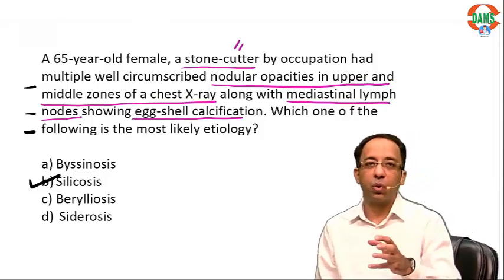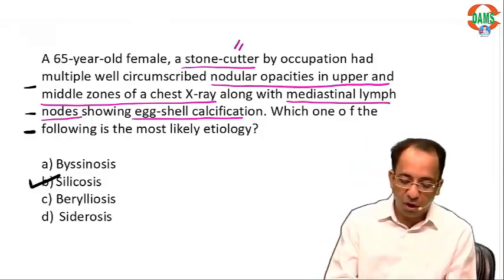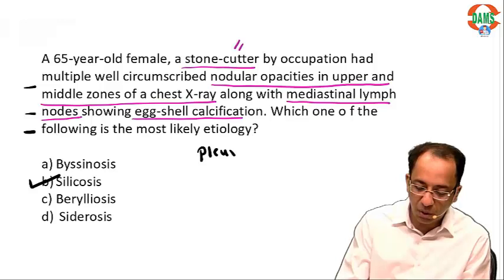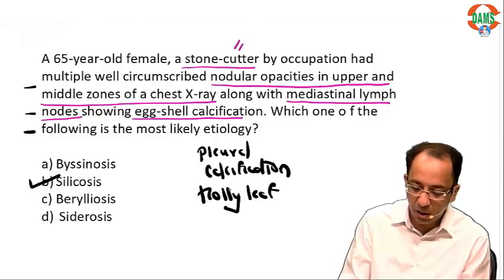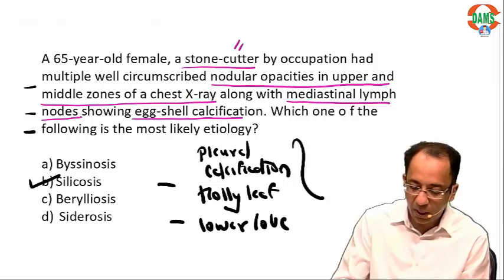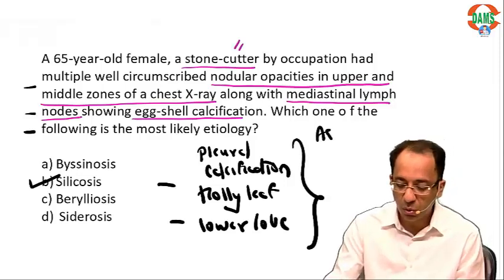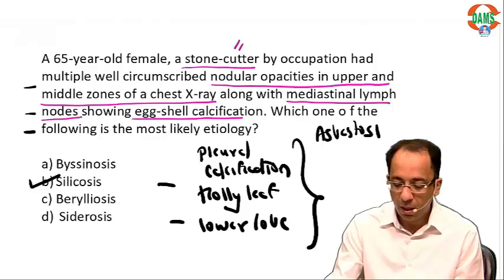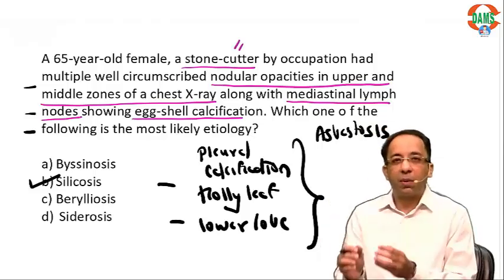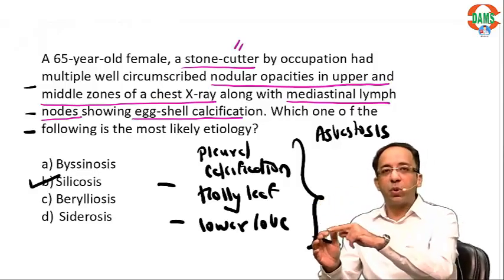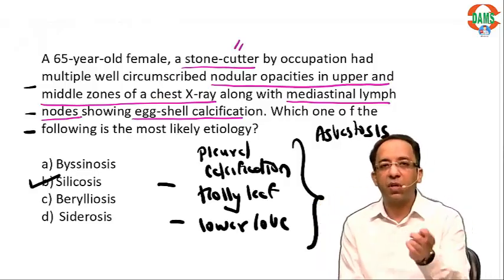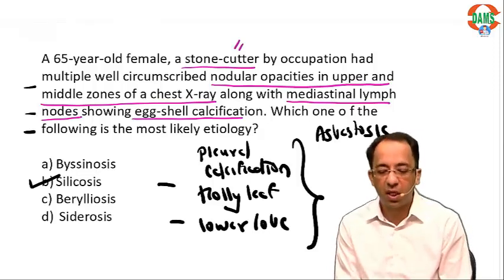For future reference, if they mention pleural calcification with a holly leaf appearance and lower lobe predominant involvement, think asbestosis. It is a very classical question. In UPSC-CMS, if they say pleural calcification, the answer is asbestosis; if they say eggshell calcification of the lymph nodes, the answer is silicosis.